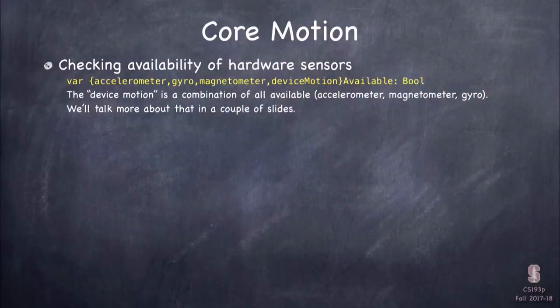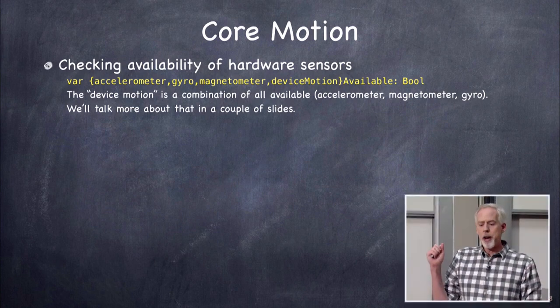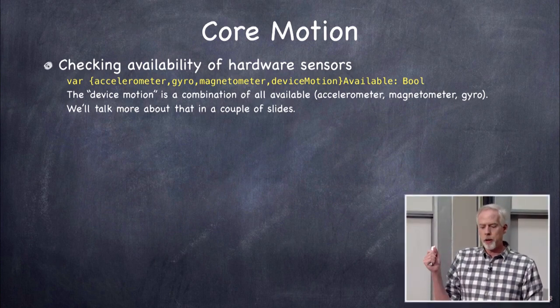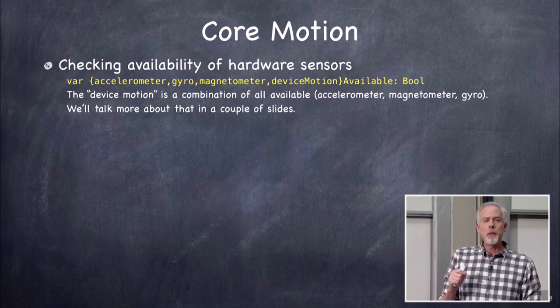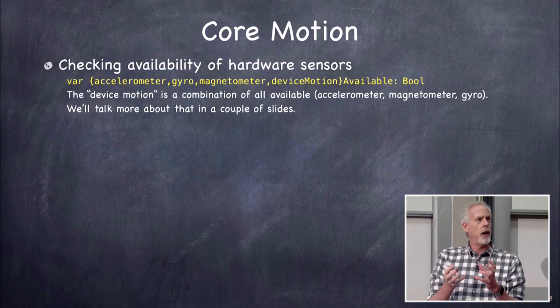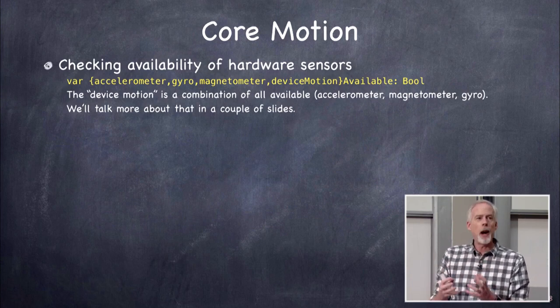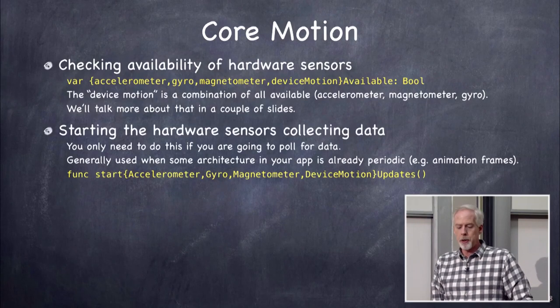Checking the availability of sensors is really simple — you get your CMMotionManager and ask isAccelerometerAvailable, isGyroAvailable, iseMagnetometerAvailable. These return yes or no. There's also something called device motion, which is essentially a combination of all the other devices. It allows much more accurate and interesting readings by combining the accelerometer, gyro, and magnetometer.